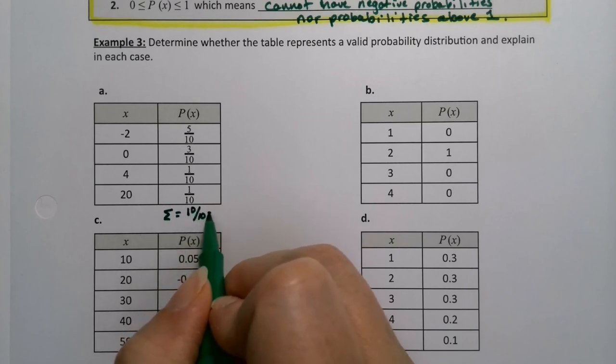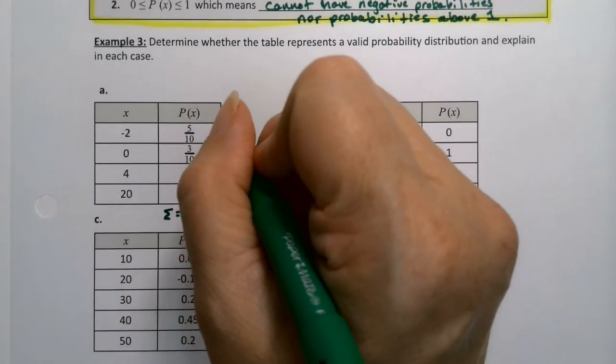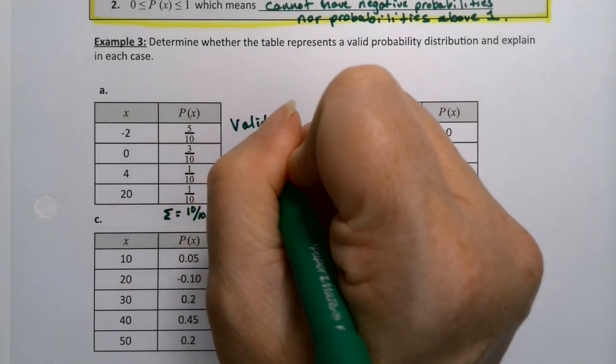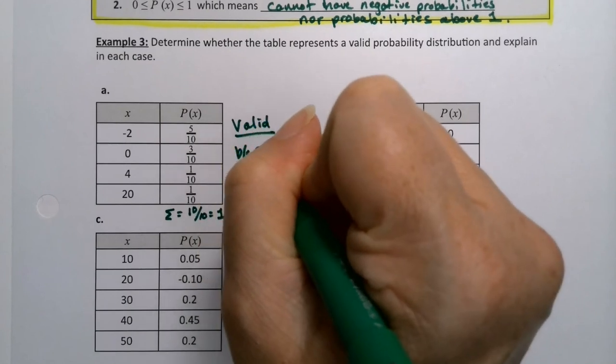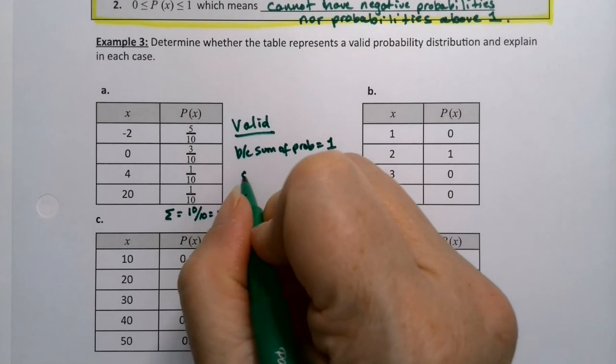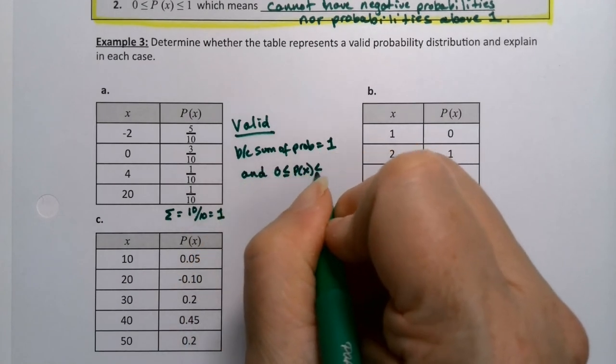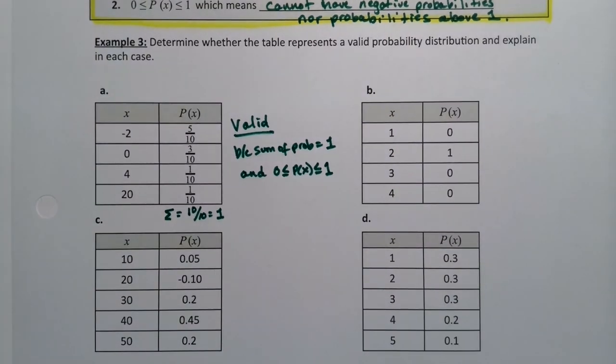So indeed, the sum of these probabilities is one. It's 10 out of 10, which is one. And none of the probabilities are negative. So this is valid because the sum of the probabilities is one and all the probabilities are between zero and one. No negatives.